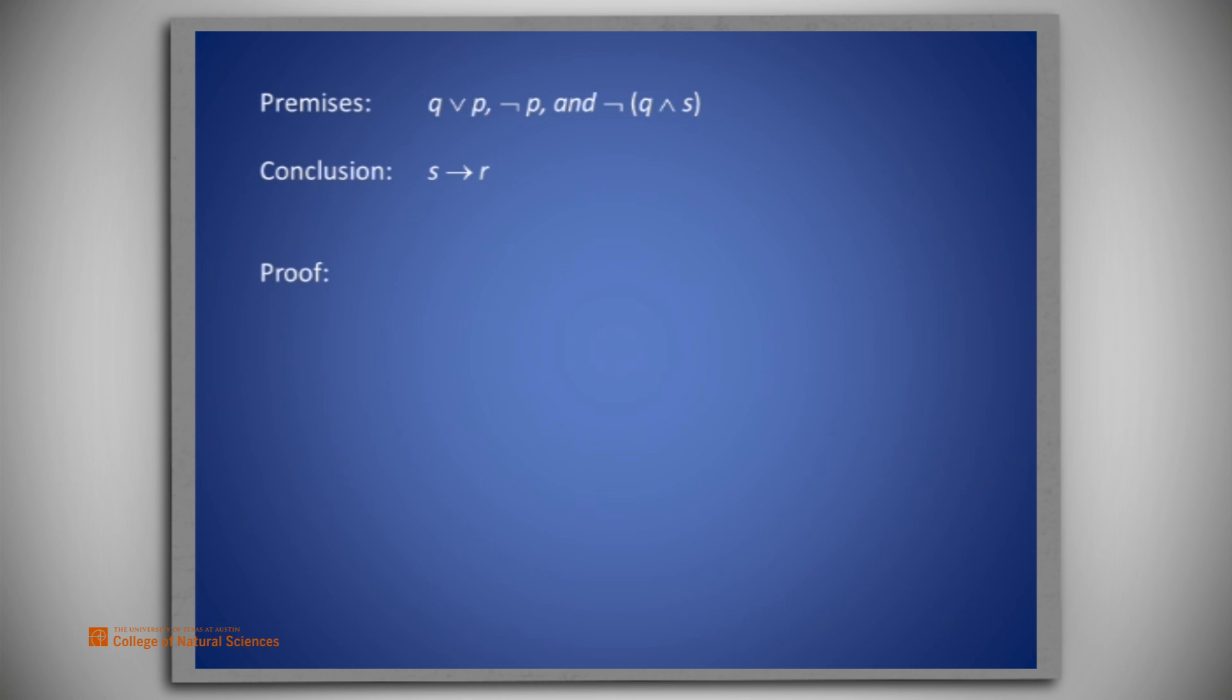Here, then, is the proof. We first list our three given premises: Q or P, not P, and the negation of Q and S. From the first two premises and the disjunctive syllogism rule, we conclude Q.